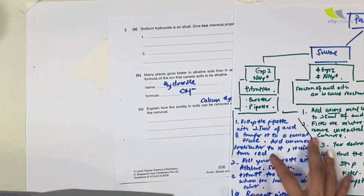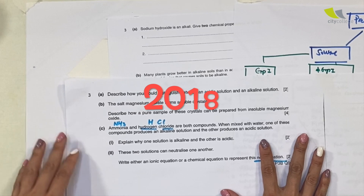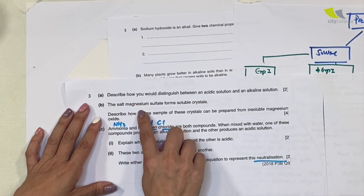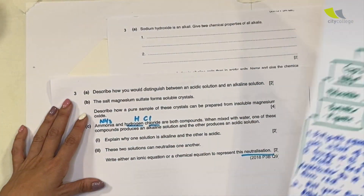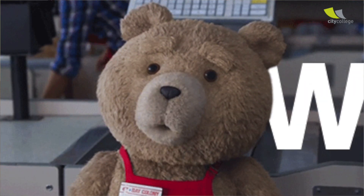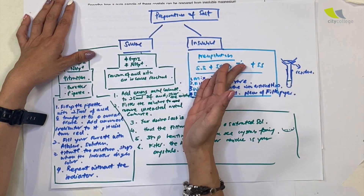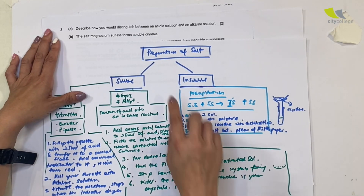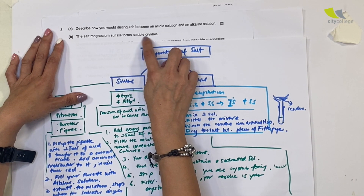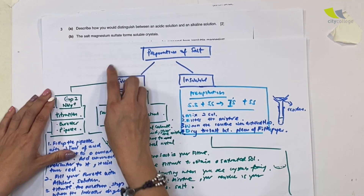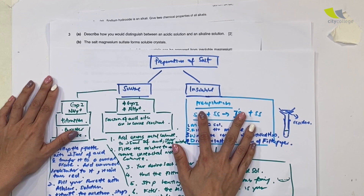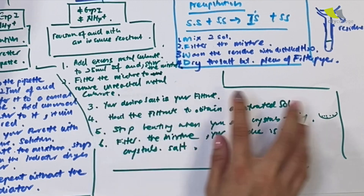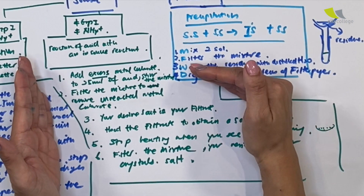Moving on to 2018. They say: the salt magnesium sulfate forms soluble crystals. They will tell you whether they are soluble or insoluble, but I still hope you will remember the solubility salt table. They ask you to prepare soluble crystals. Magnesium sulfate — magnesium is not from group one — so I should be using the acid with insoluble reactant method.